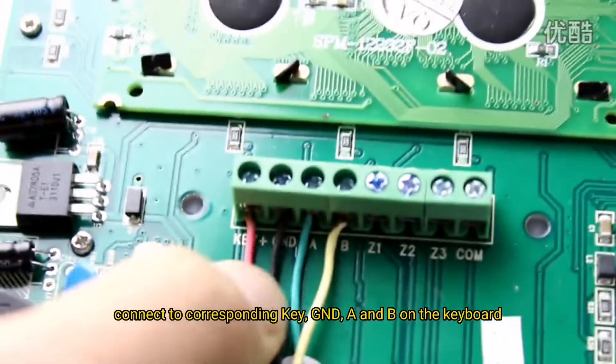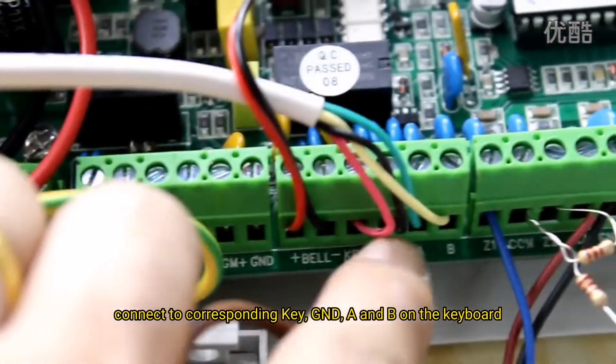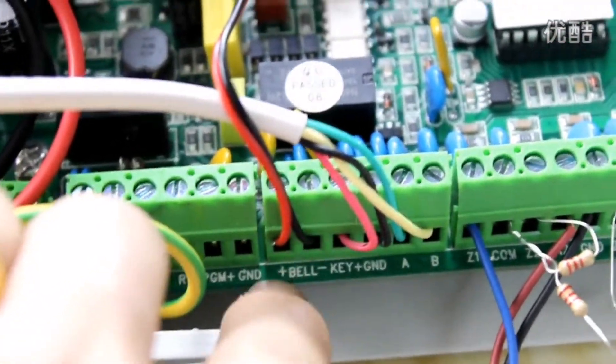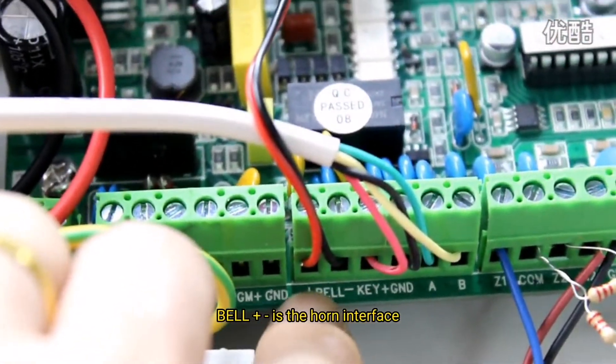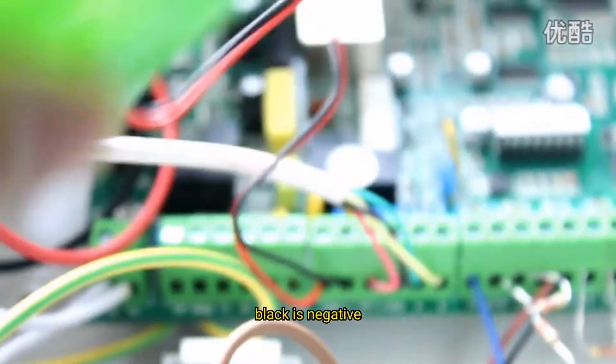Connect to corresponding key GND, A, B on the keyboard. B is the home interface, red is positive, black is negative.